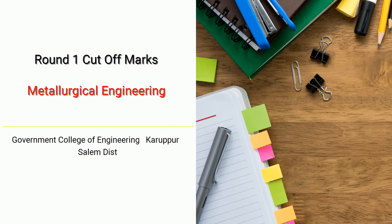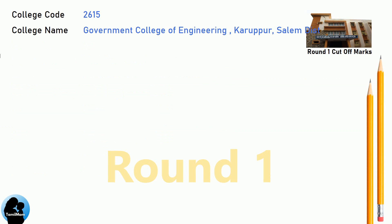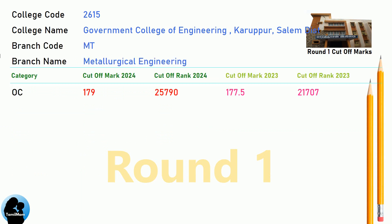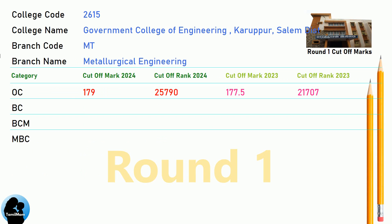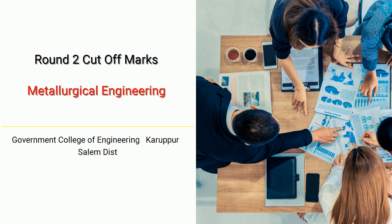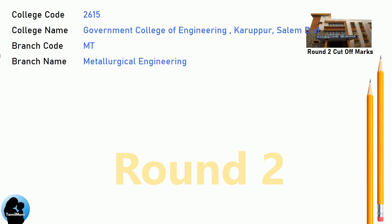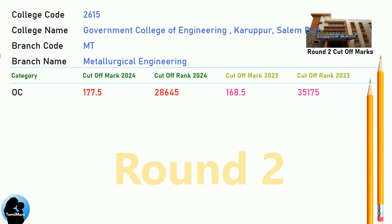DNEA Round 1 Cut-off for Government College of Engineering, Karupur, Salem District in Metallurgical Engineering. DNEA Round 2 Cut-off for Government College of Engineering, Karupur, Salem District in Metallurgical Engineering.